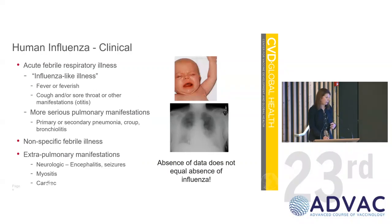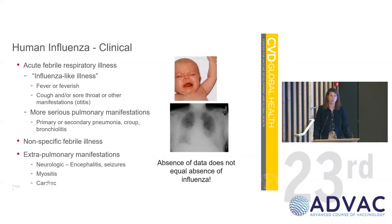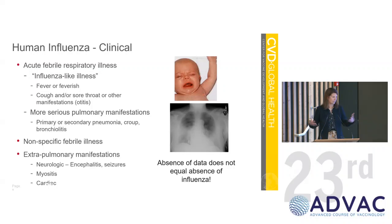What do we know about human clinical influenza? It's an acute febrile respiratory illness. The usual definition is fever or feverishness with cough and/or sore throat. But we know there are many other manifestations, and you find what you look for. If you're looking for this definition, that's what you'll find. When we start to look more broadly, we find that influenza causes broader symptomatology.